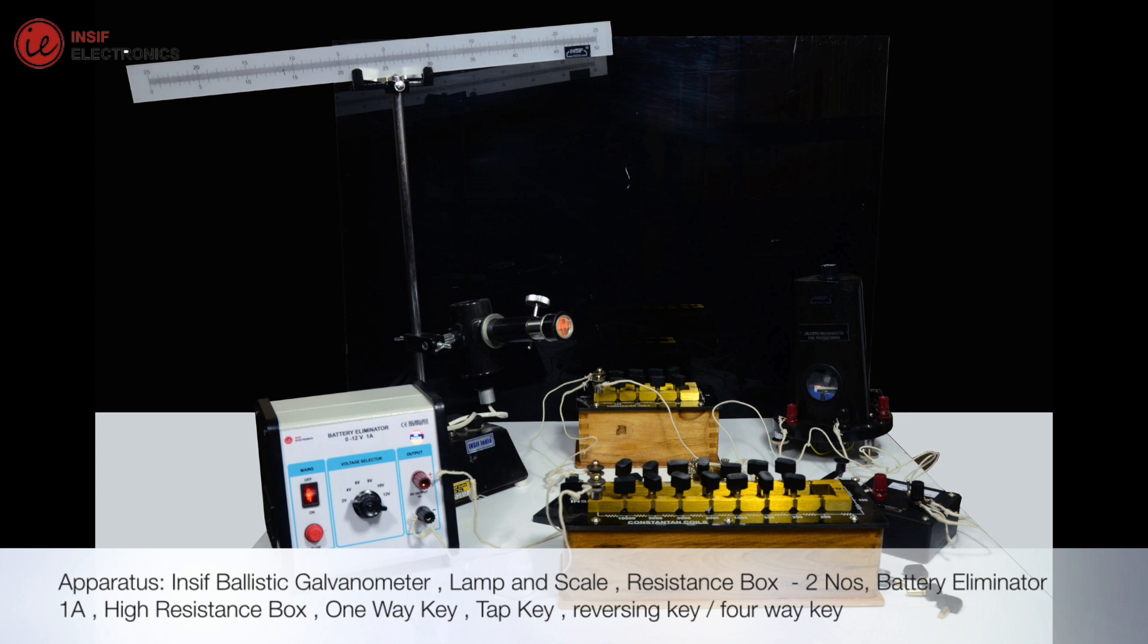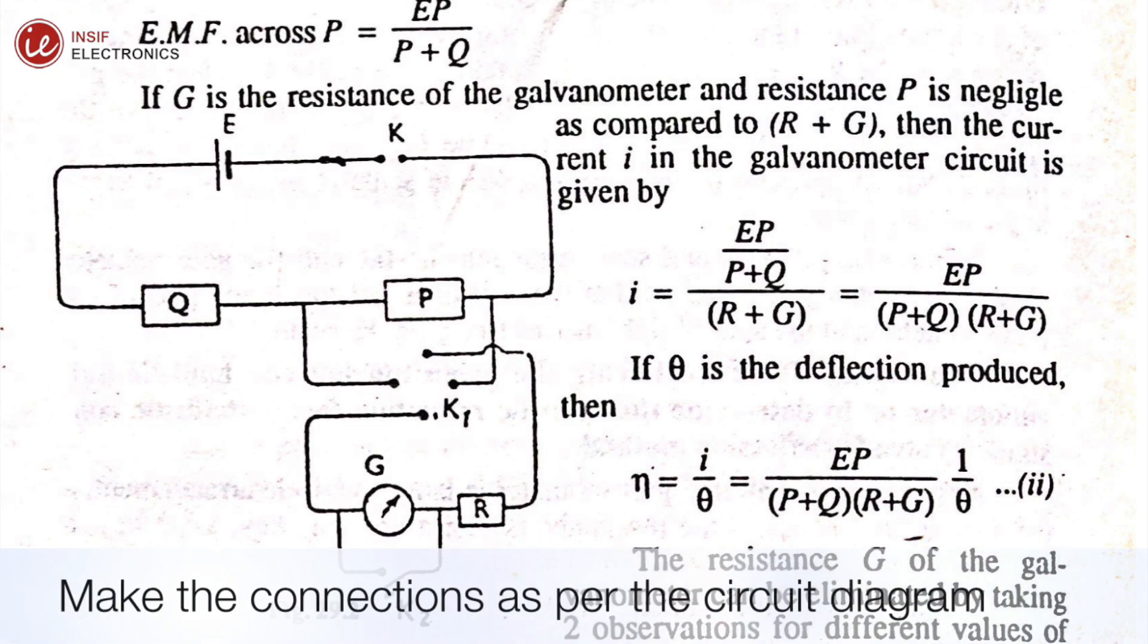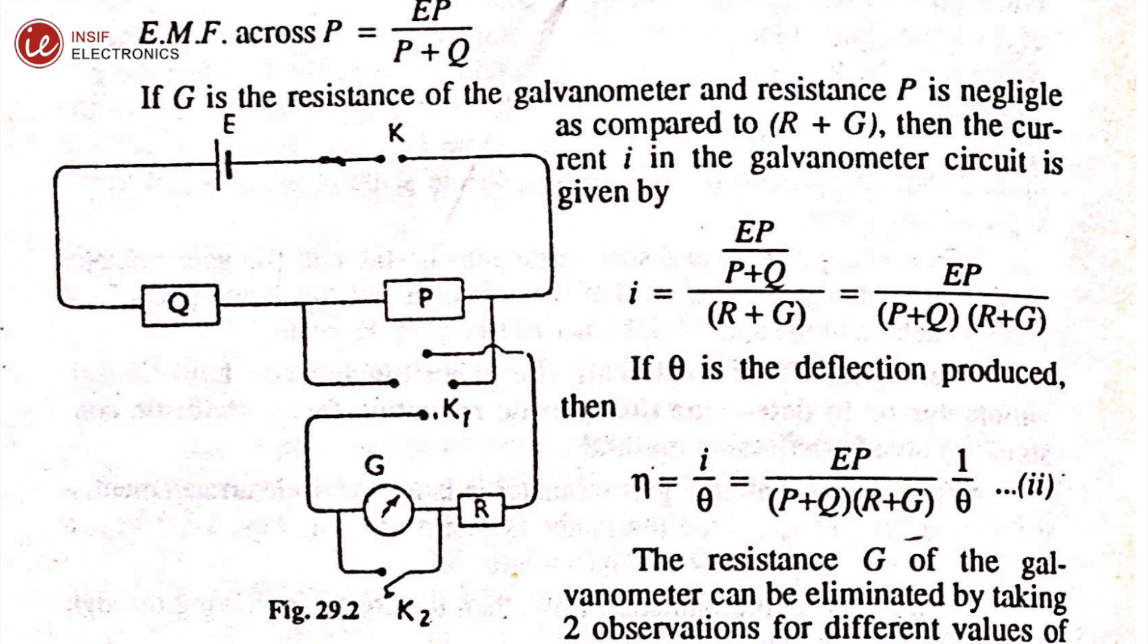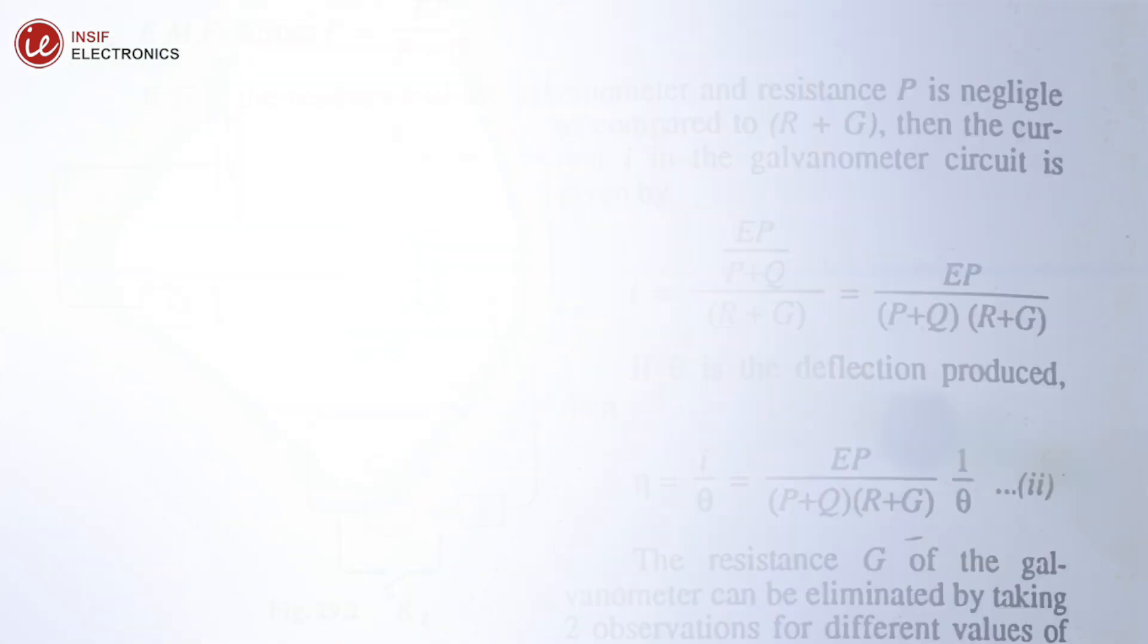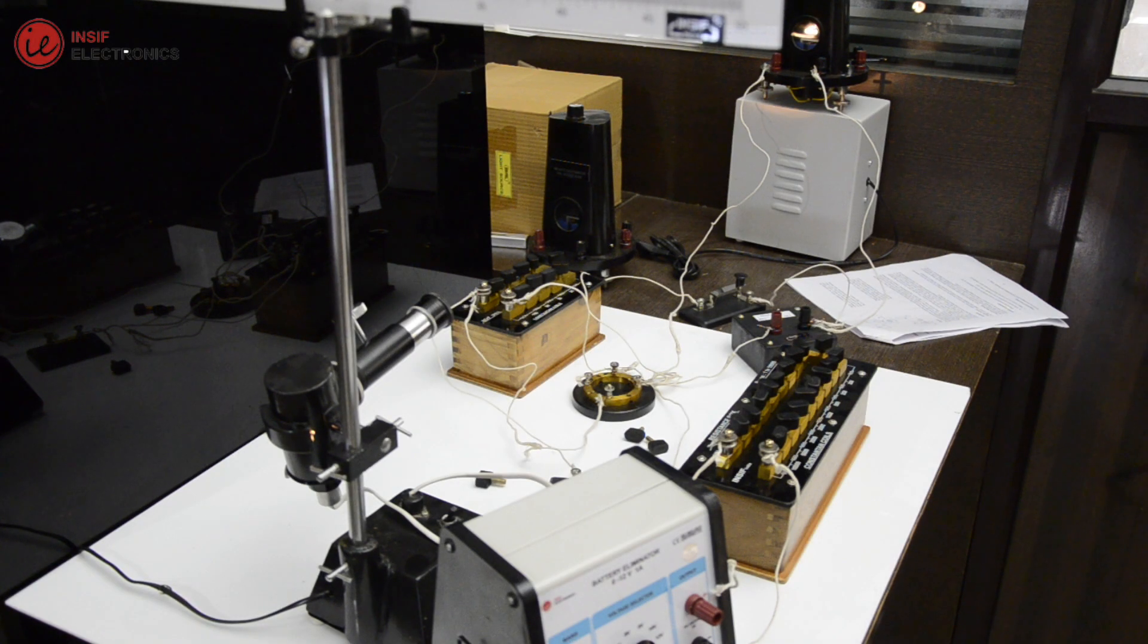Now do the connections according to the circuit diagram and adjust the lamp and scale arrangement so that the spot of light is obtained on the scale placed at a distance of 1 meter from the mirror of the galvanometer.